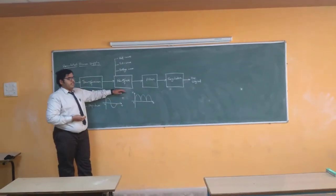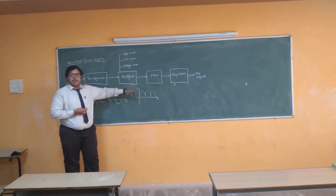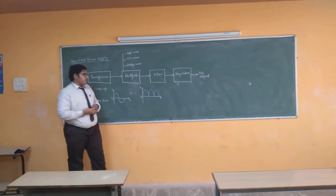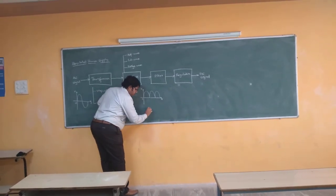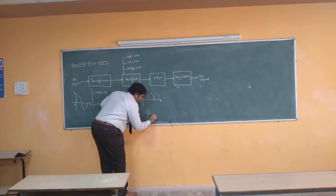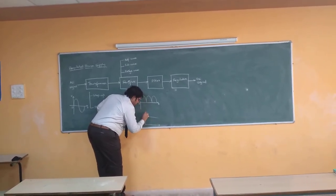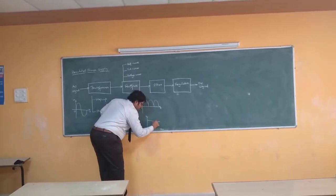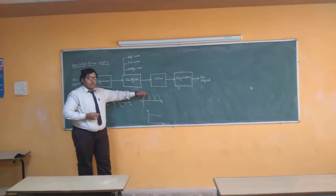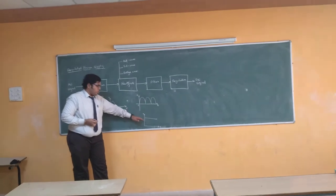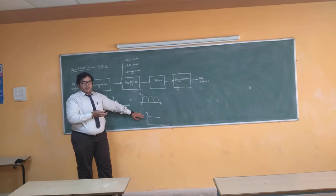The basic disadvantage of the rectifier is that the ripples present in this particular signal are very high. When you compare this graph to a pure DC signal, the ripples in the rectifier output are much more compared to the DC signal. So this pulsating output is not our desired final outcome for this device.